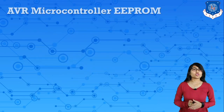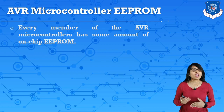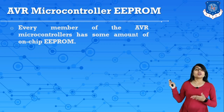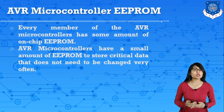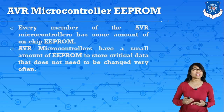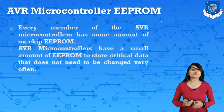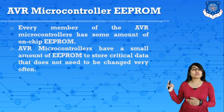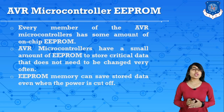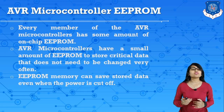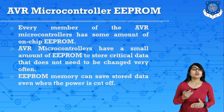This AVR microcontroller has an EEPROM — electrically erasable programmable ROM. Every member of the AVR microcontroller has some amount of on-chip EEPROM to store critical data that does not need to be changed very often. This EEPROM can save stored data even when the power is cut off, which is why it is used to store critical data.